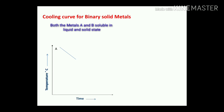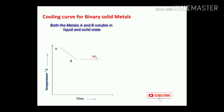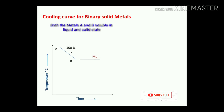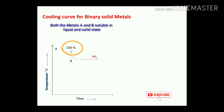Starting from a point higher than the melting point of both metal A and B, the system cools down to point B, which represents the melting point of metal A (the higher melting point). In the region A to B, the temperature drops without any change in the liquid phase — this region represents 100% liquid.